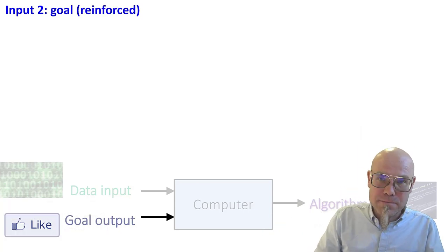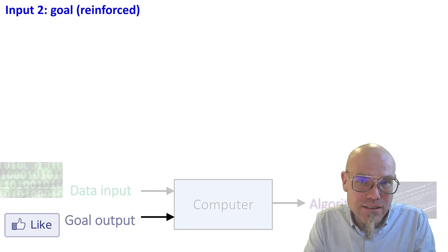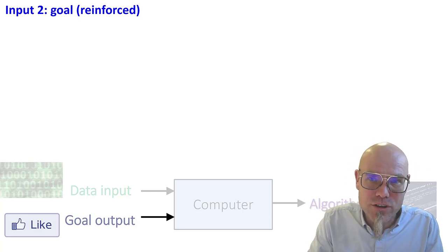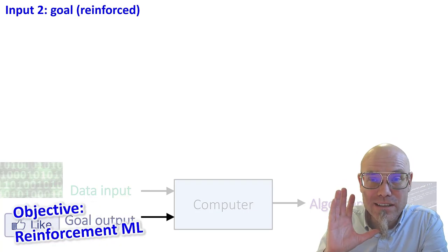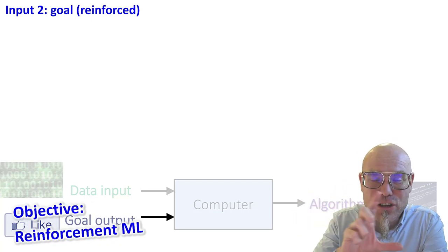Now, what is reinforcement learning? A lot of machine learning today is reinforcement learning. And reinforcement learning, I basically, I give the machine some kind of landscape, and then I give it a goal.